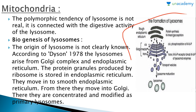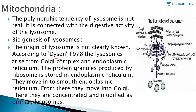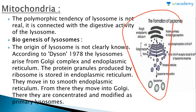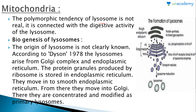There is a diagram showing the formation of lysosomes, based on the statement given by Dyson. There is a rough endoplasmic reticulum where protein synthesis is linked with many enzymes and transport processes. The material is then transported to the Golgi complex, from where lysosomes are formed. The polymorphic tendency of lysosomes is not real — it is connected with the digestive activity of the lysosomes.